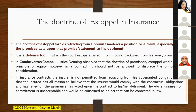An interesting case illustrating this is Cobbe v. Cobbe. In that case, Justice Denning observed that the doctrine of promissory estoppel works on the principle of equity; however, in a contract it should not be allowed to displace the principle of consideration. As you know, for a contract to be valid, there must be offer, acceptance, and consideration, and parties must be competent to contract.